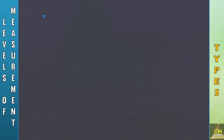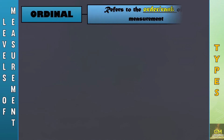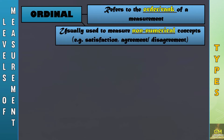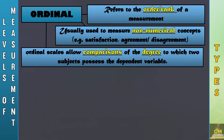Now, at this point, we're going to focus on the ordinal level of measurement. The ordinal level of measurement refers to the order or rank of a measurement. It is usually used to measure non-numerical concepts such as satisfaction level or levels of agreement or disagreement. Also, the ordinal scales allow comparisons of the degree to which two subjects possess the dependent variable.